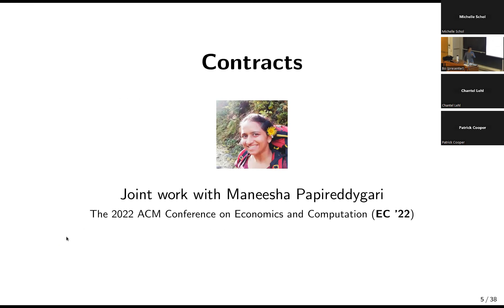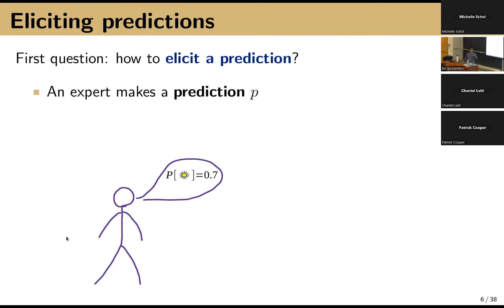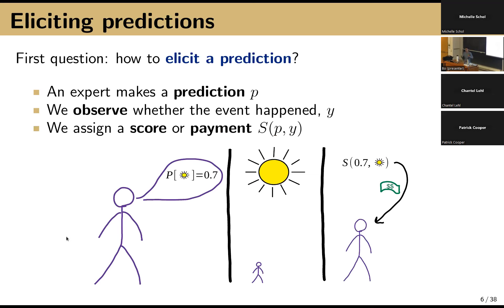The first project is joint work with my student Manisha Paparadigari, which appeared last year at EC22 — the premier venue for economics and computation — hosted right here at CU Boulder. I want to start with a problem we talk a lot about: how do you elicit a prediction of the future? The setup is an expert makes some prediction, like 'the chance of sun is 0.7,' and then you find out later whether it's sunny or not. You give them a score or payment for accuracy, and you want to define this scoring rule so the agent actually wants to be truthful.